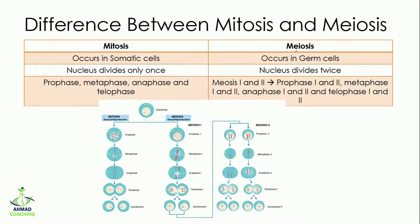The mitosis phases are prophase, metaphase, anaphase, and telophase. In meiosis we have meiosis 1 and meiosis 2, giving us prophase 1, prophase 2, metaphase 1, metaphase 2, anaphase 1, anaphase 2, telophase 1, and telophase 2.